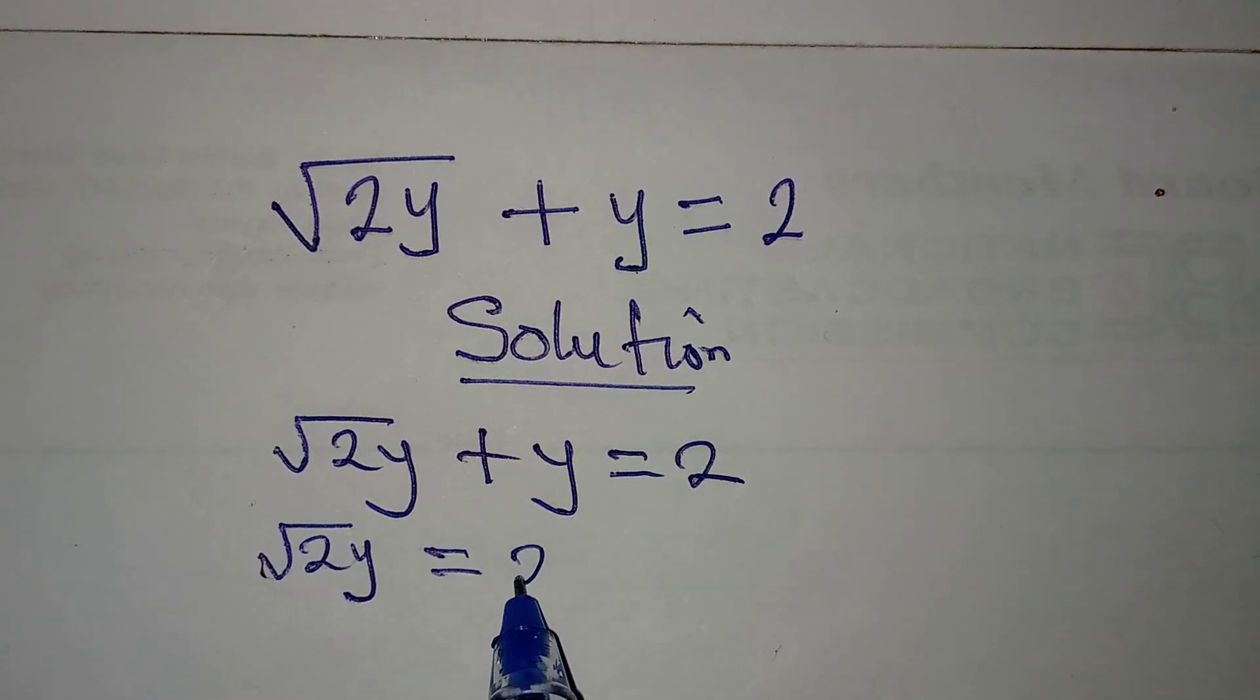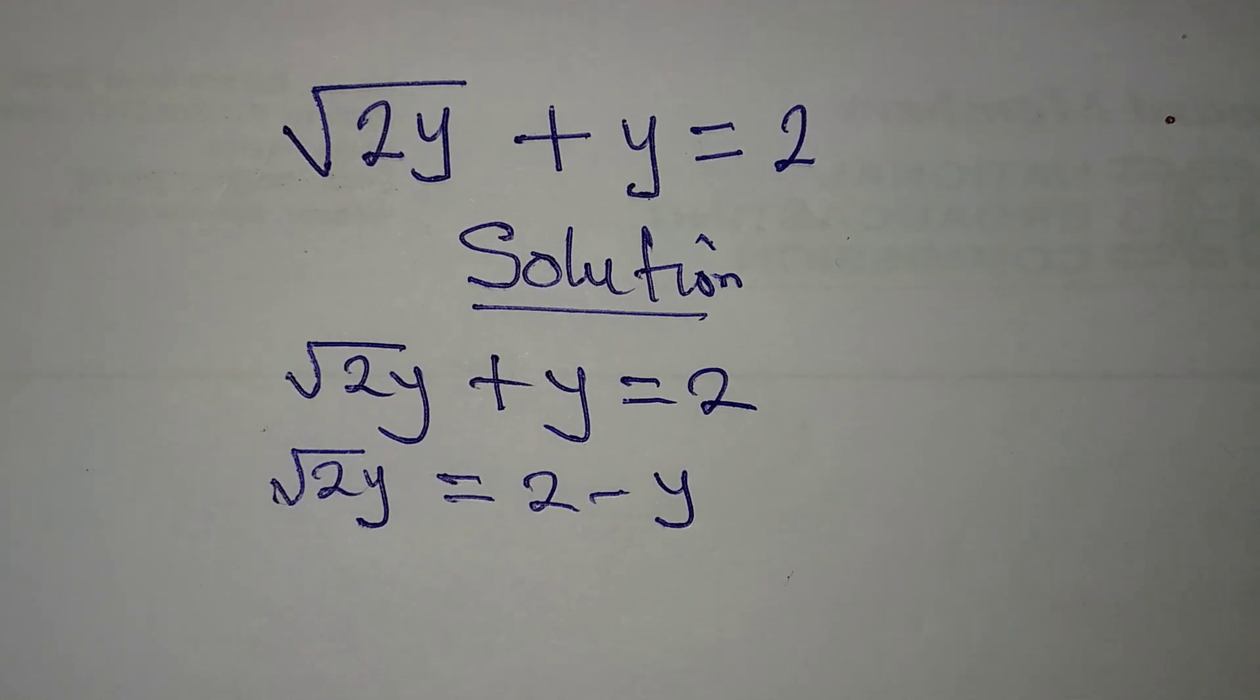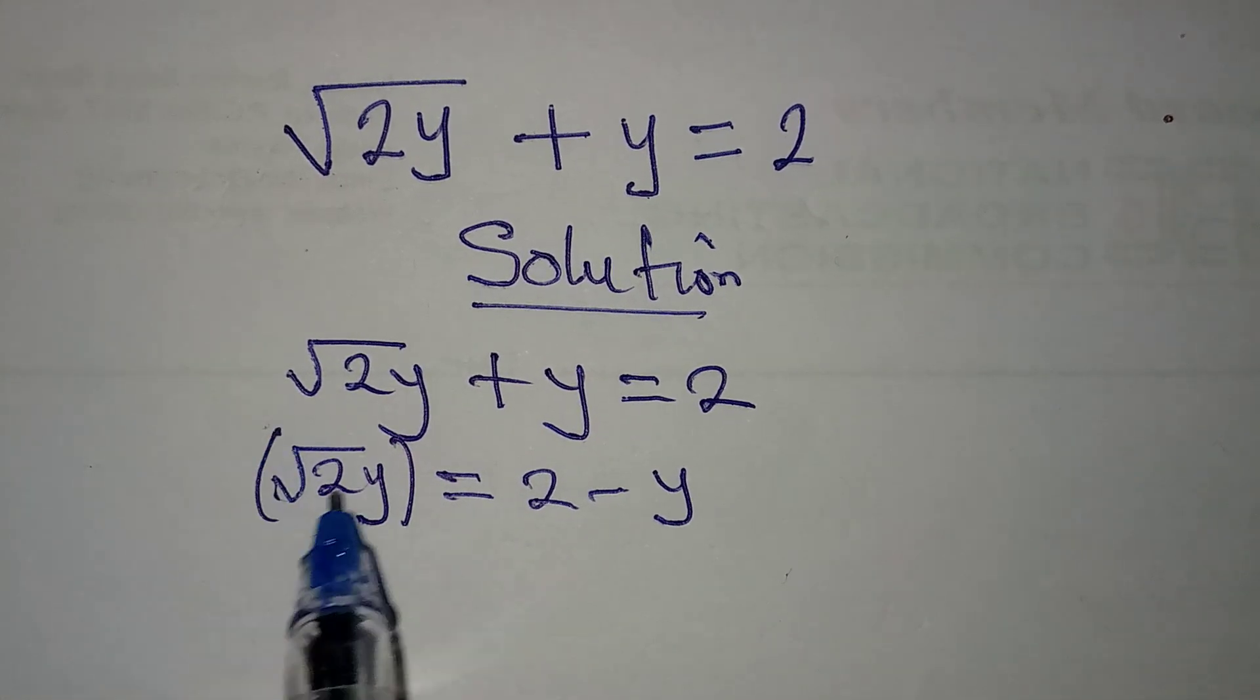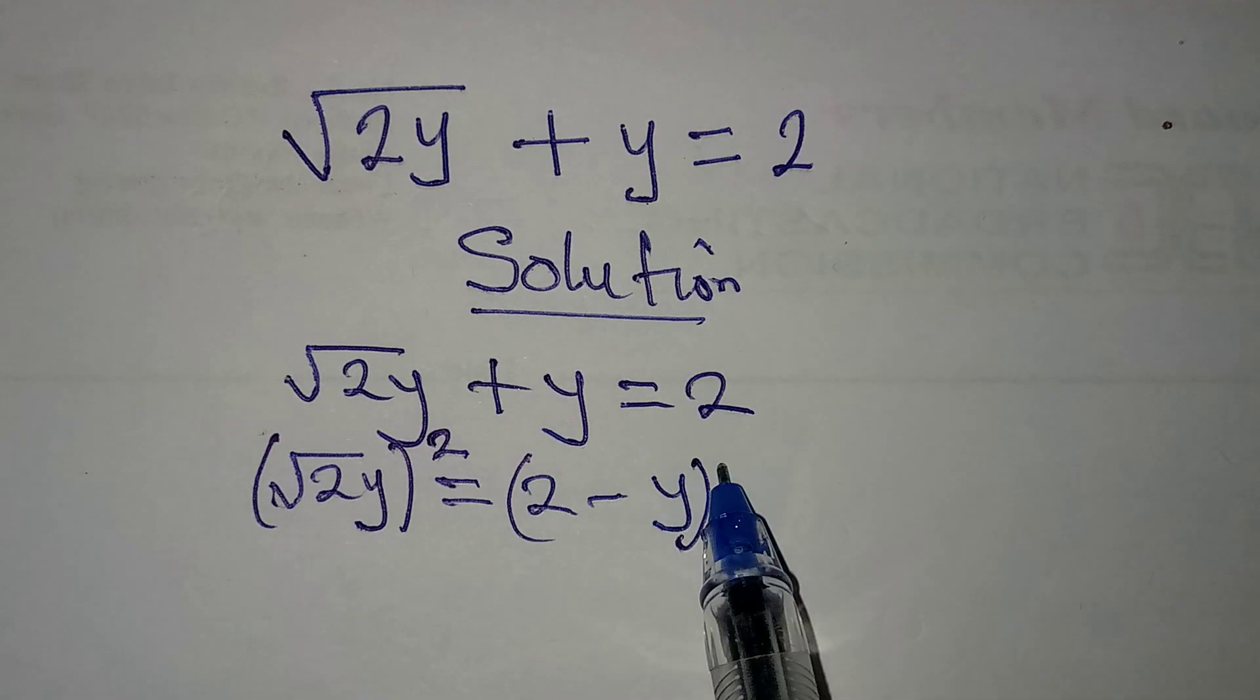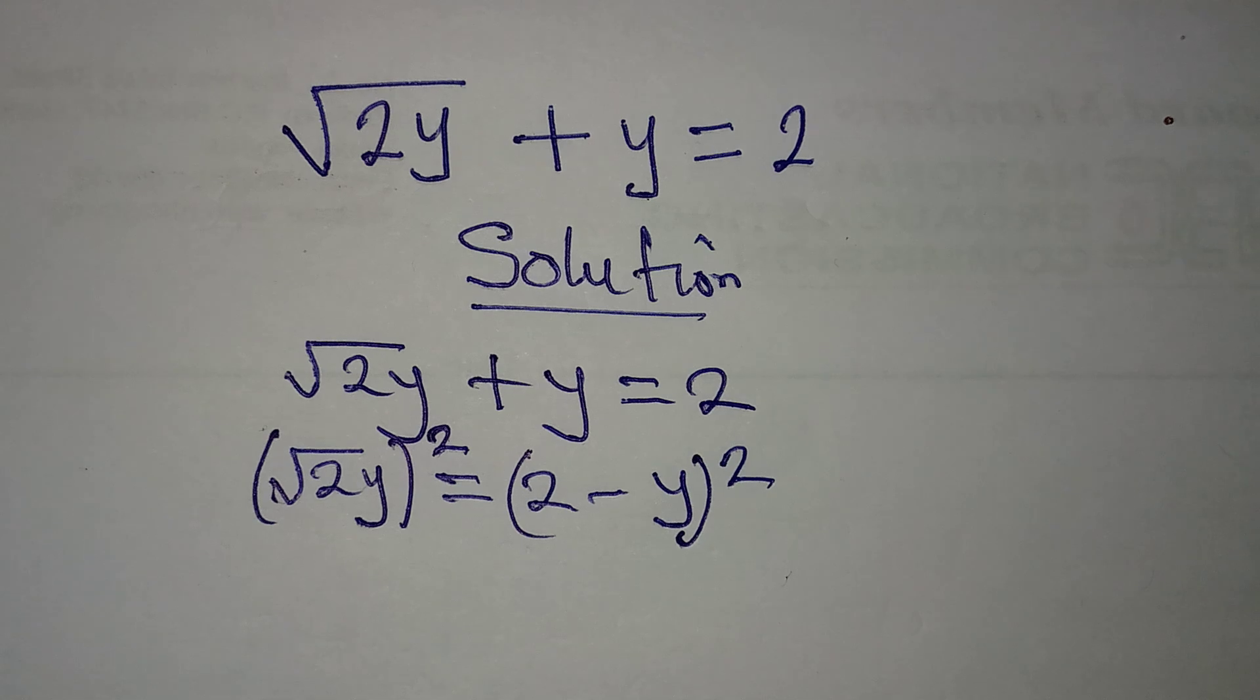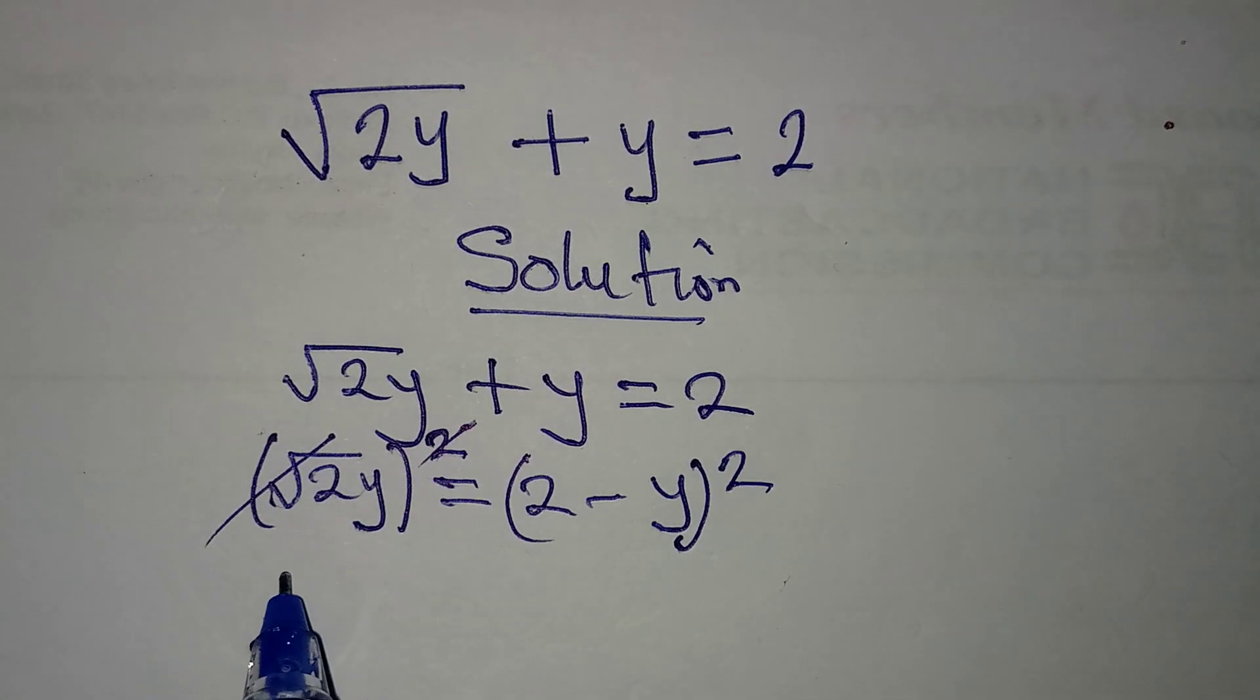Now the next thing is to square both sides so that 2y will become the subject. We have to square both sides. This will cancel so that 2y will be equal to (2 - y) times (2 - y).